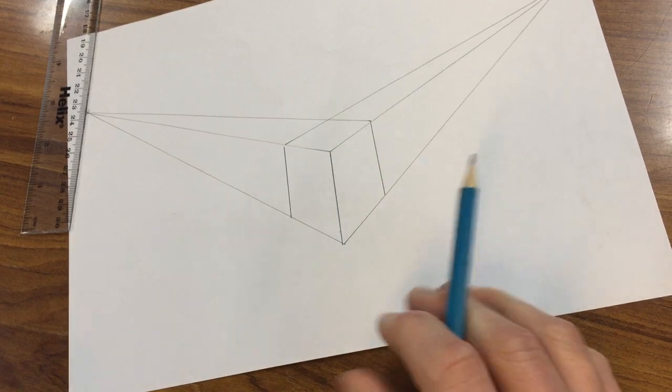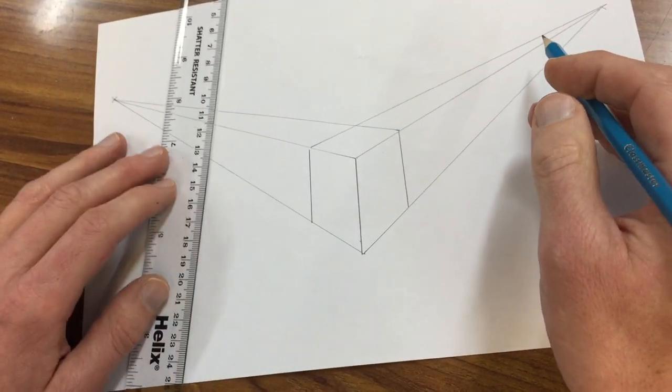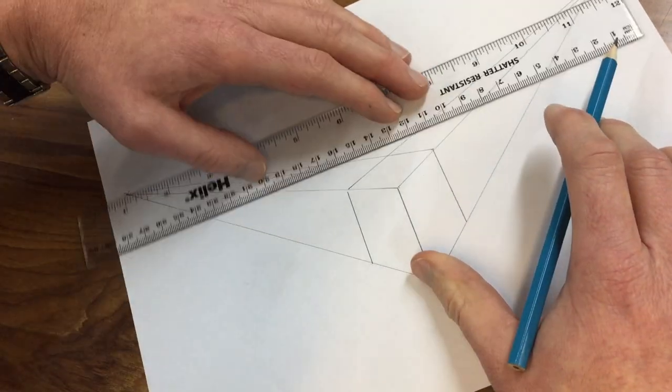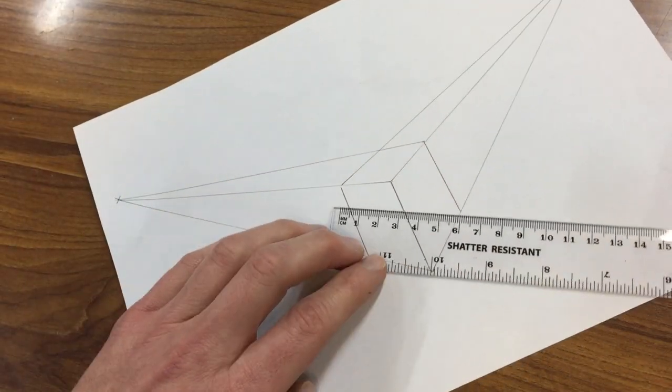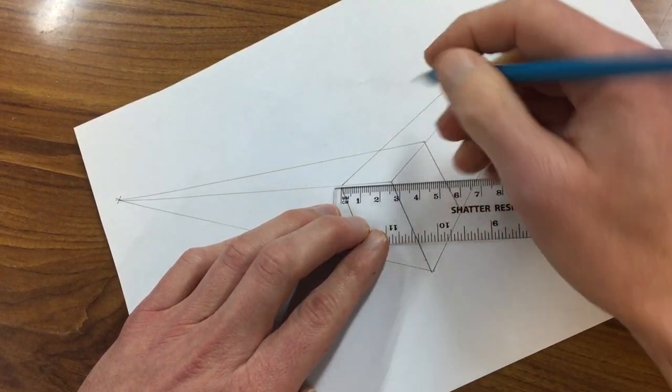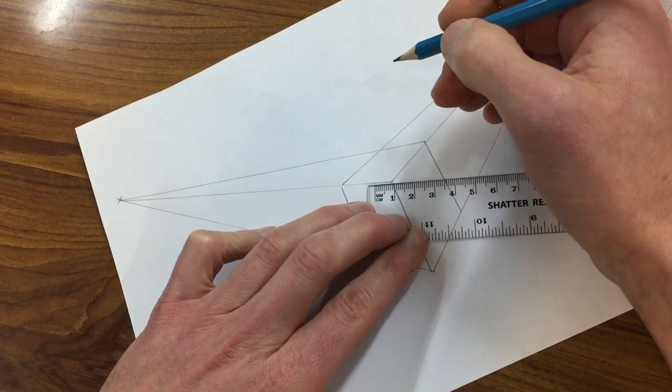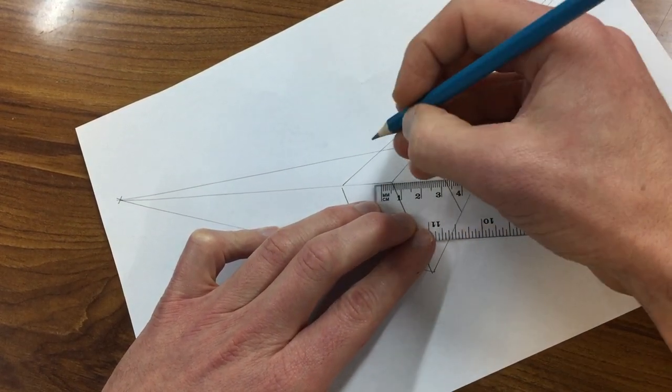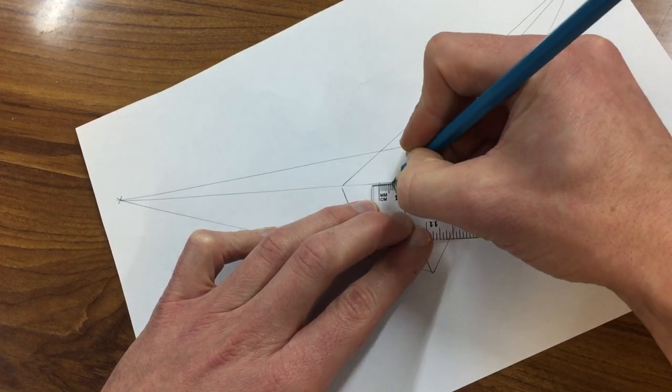However, I'm not going to erase those guidelines yet because I need to do the top of the Lego brick. Now to do that, we need another set of guidelines. So I'm gonna go from this corner and mark a spot that's five or six or seven millimeters from there to there.